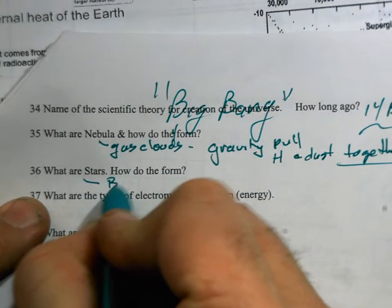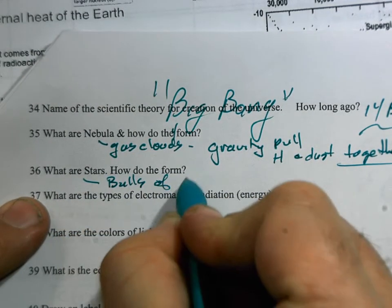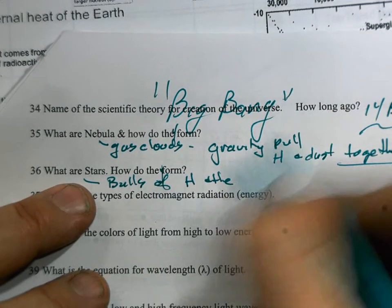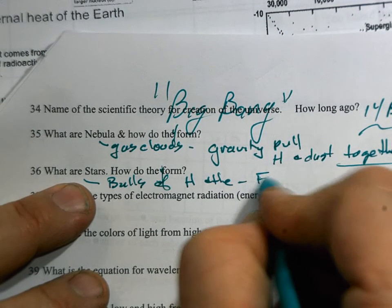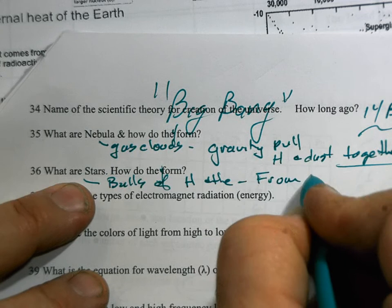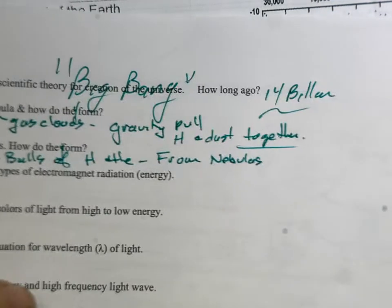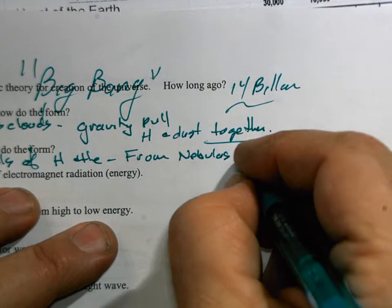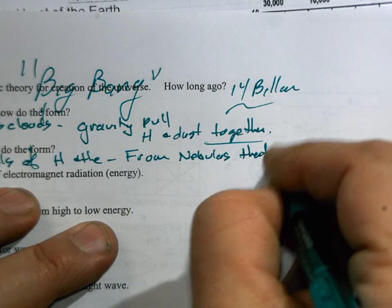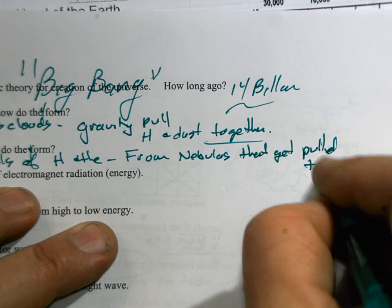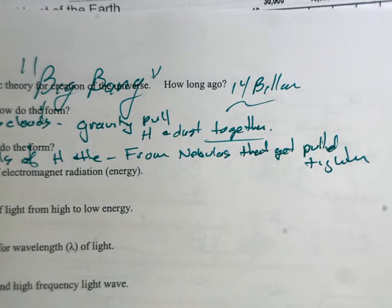What are stars? Balls of hydrogen and helium. How do they form? From nebulas. From nebulas that get pulled together even tighter.